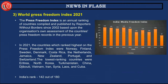Third, the World Press Freedom Index 2021 has been recently released. This is an annual ranking of countries compiled and published by Reporters Without Borders since 2002, based on the organization's assessment of each country's press freedom records in the previous year. In 2021, the highest-ranked countries were Norway, Finland, Sweden, Denmark, Costa Rica, the Netherlands, Jamaica, and New Zealand, among others. India's rank was 142 out of 180 countries.